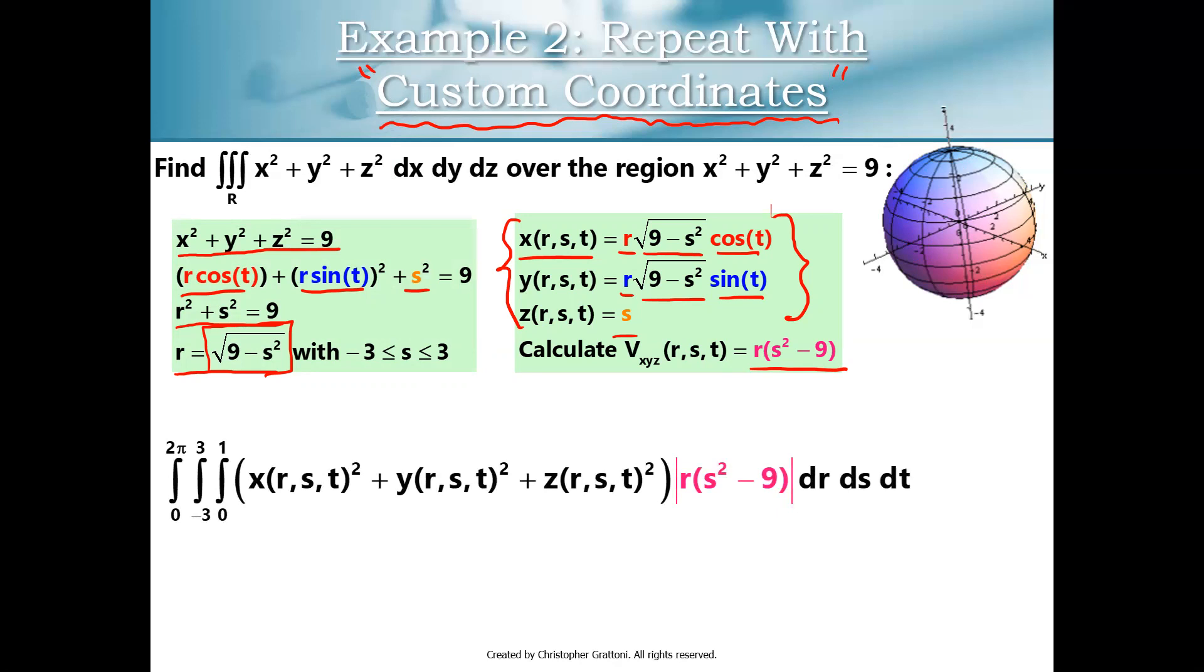All right, so in this case, in the previous example, I had r for my volume conversion factor. Now I have the absolute value of r times s squared minus 9, so there's a difference here. We have a little bit of a change. The other place we have a change is in the previous version, our upper limit of integration was the square root of 9 minus s squared. Now it's 1. So you can think about it as follows. The previous example is nice because it has a really simple Jacobian determinant, but a slightly more complicated triple integral setup for the limits of integration.